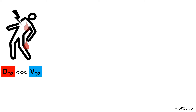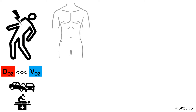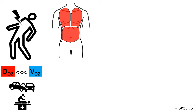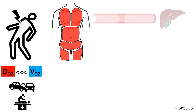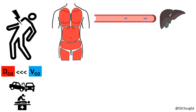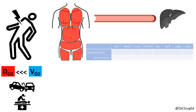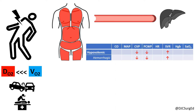Hypovolemic shock, including hemorrhagic shock, is the most common etiology of shock in the trauma and surgical patient. Life-threatening hemorrhage can occur in both thoracic cavities, the peritoneal cavity, the retroperitoneum and pelvis, the thigh and femur, and externally, leading to a decrease in circulatory volume and subsequent tissue hypoperfusion. This is manifested with decreased markers of preload such as central venous and pulmonary capillary wedge pressures and an increase in systemic vascular resistance.